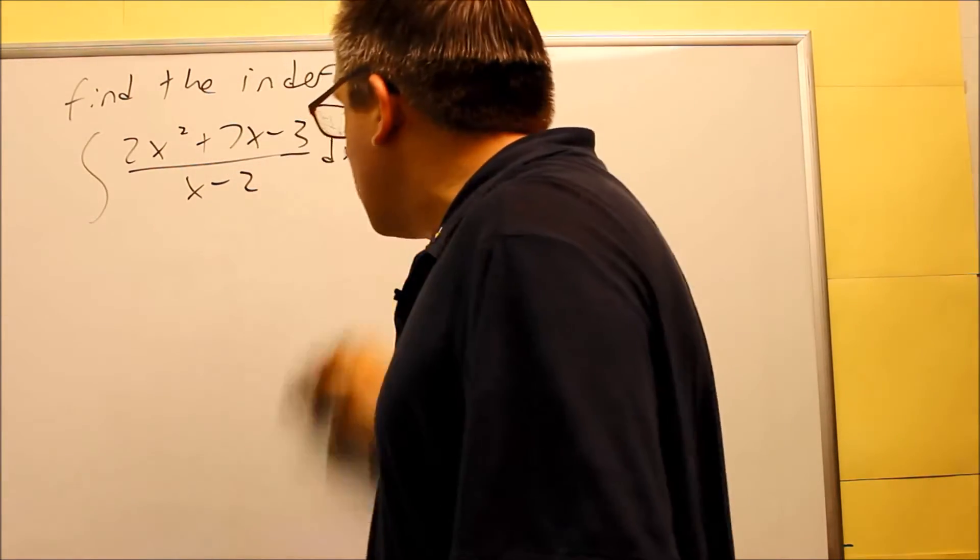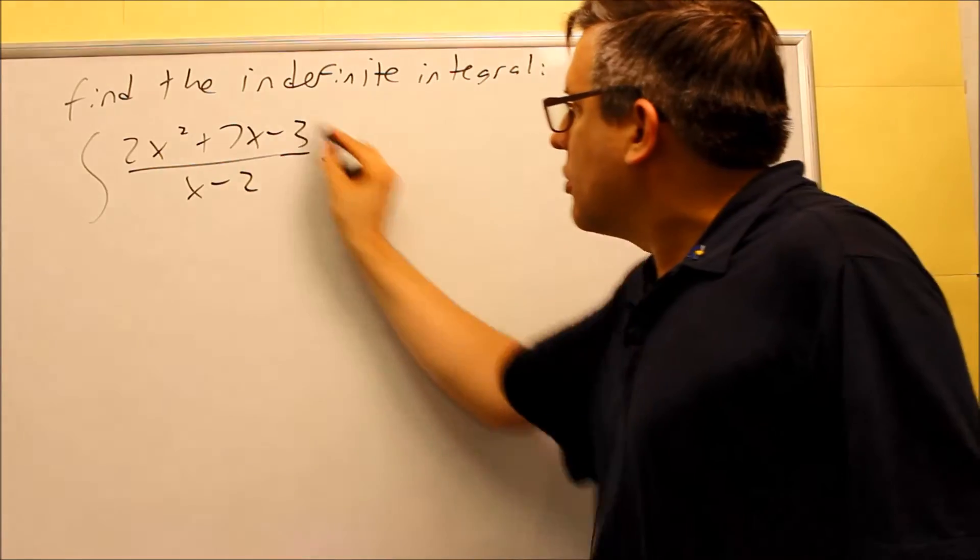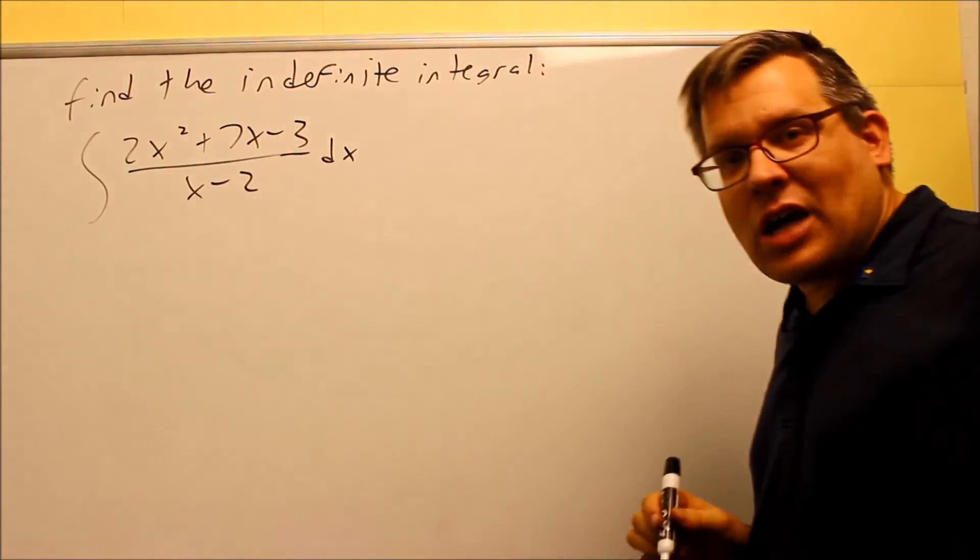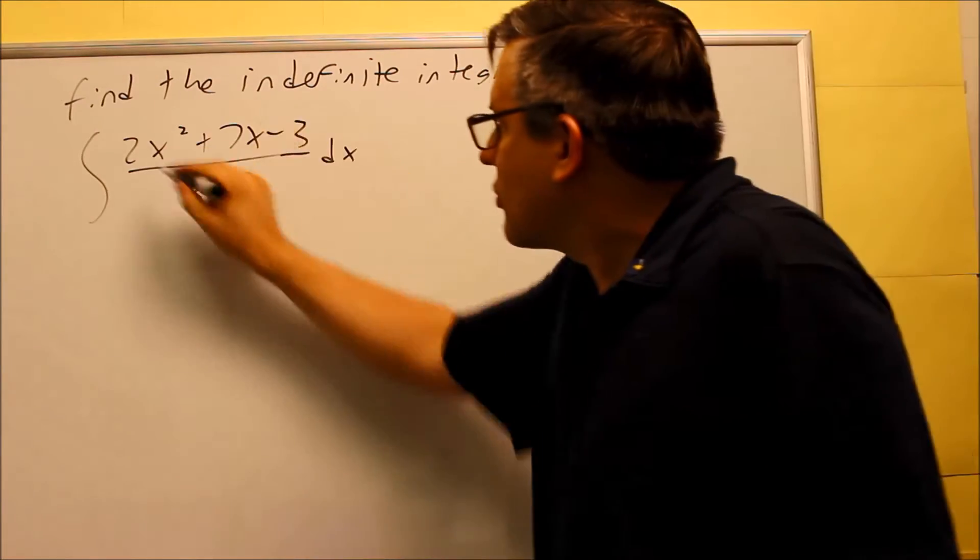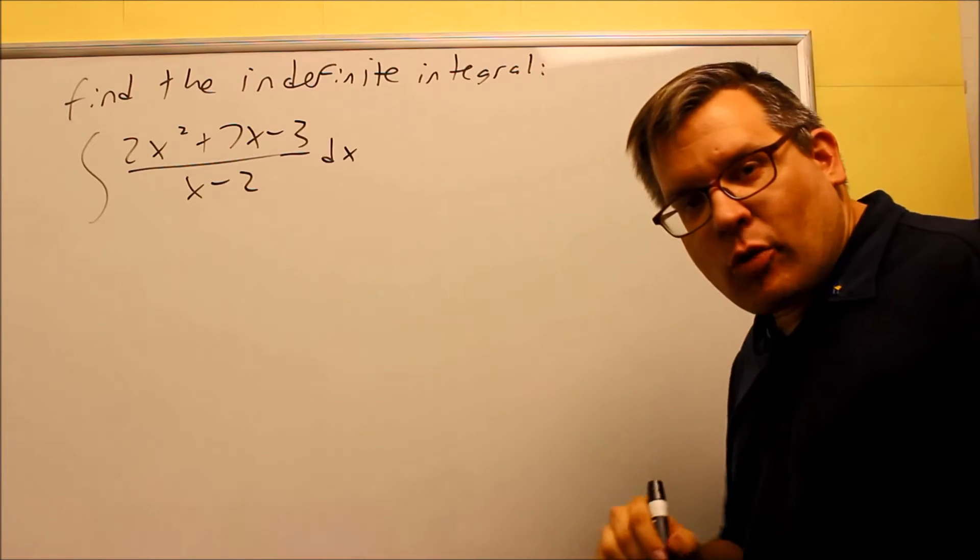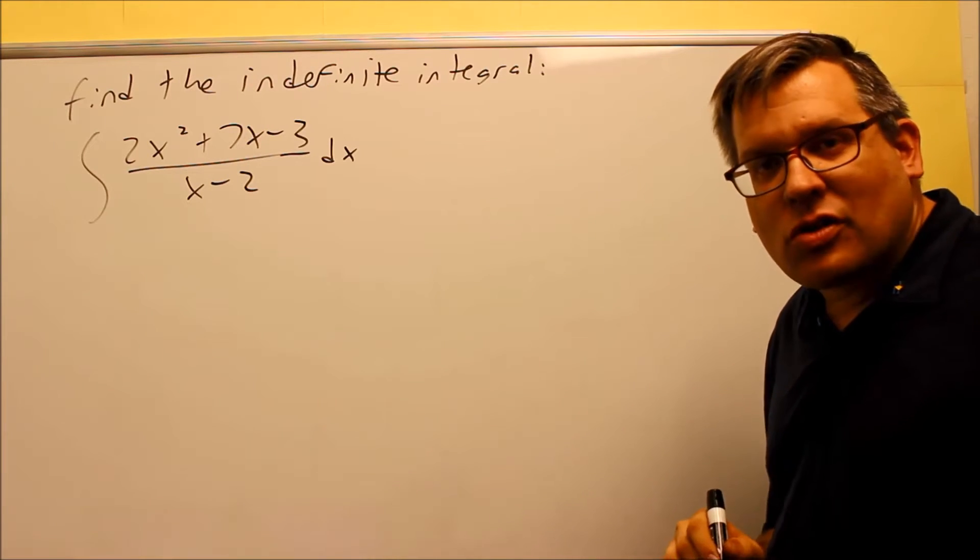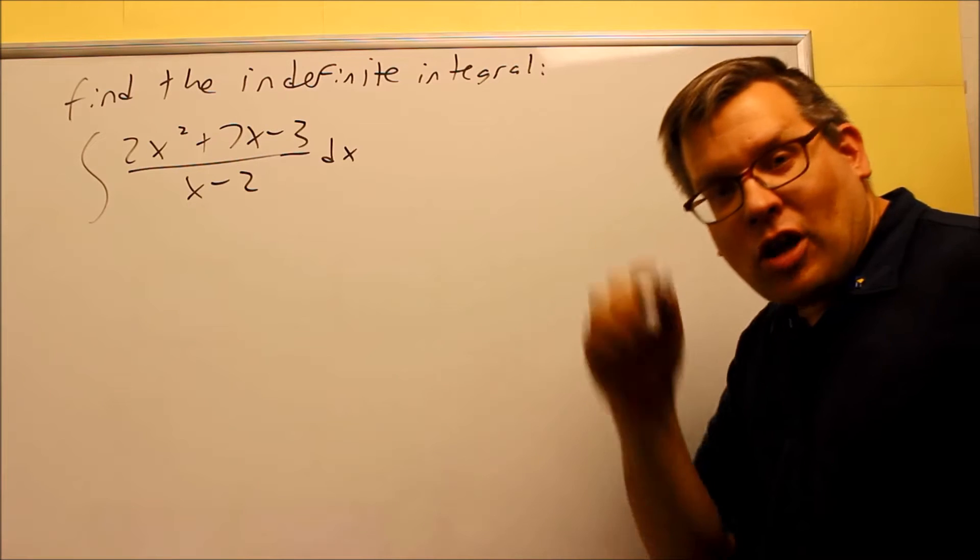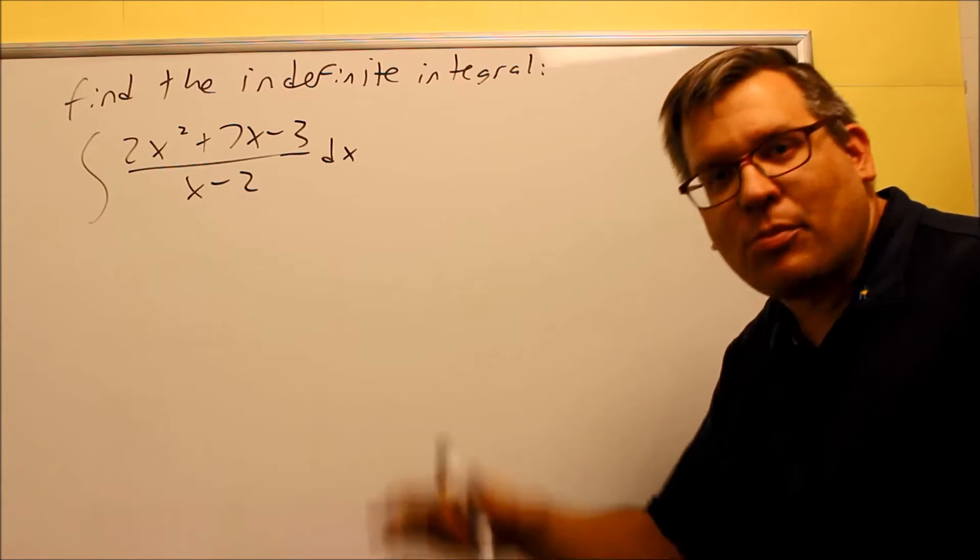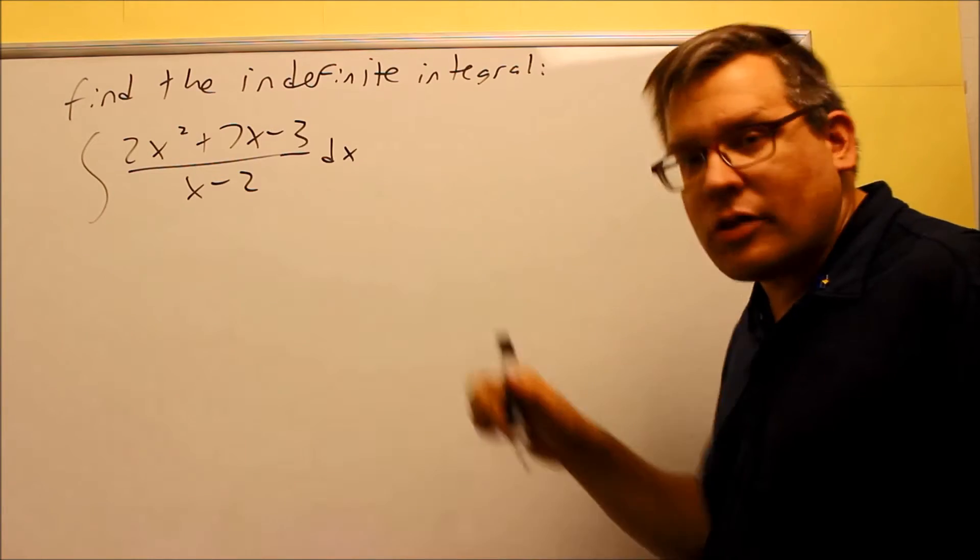So instead of jumping in and doing the u right away, what I want to do is see if I can change the original problem. Now whenever you have higher powers on the top, you can actually break this apart into two separate fractions. So how do you do that? Now we've got to reach back to pre-calculus again. This is going to be involving long division. Yeah, long division, you may not have seen it for a long time, you might not think you'd ever see it again, but we are going to use it again here on this problem.